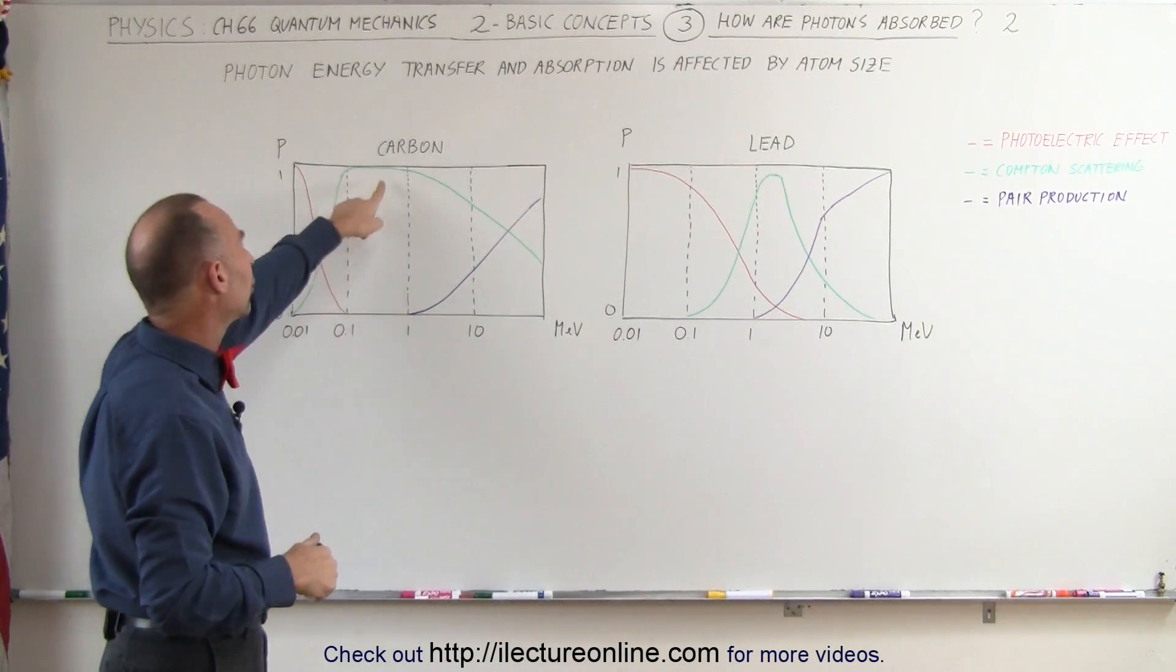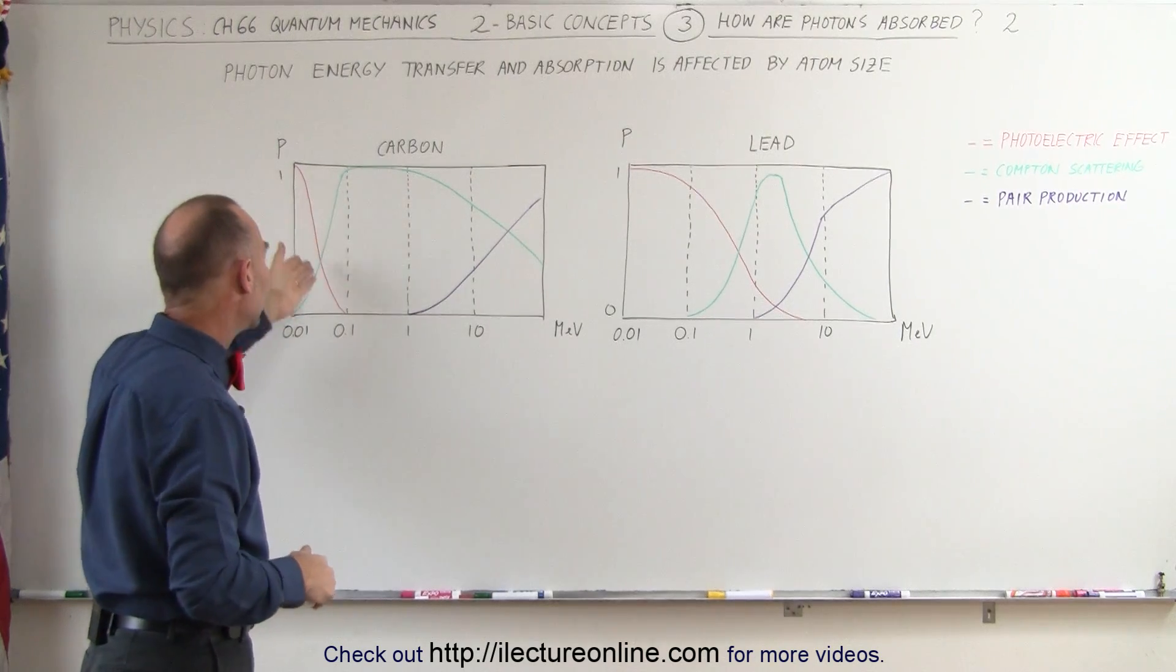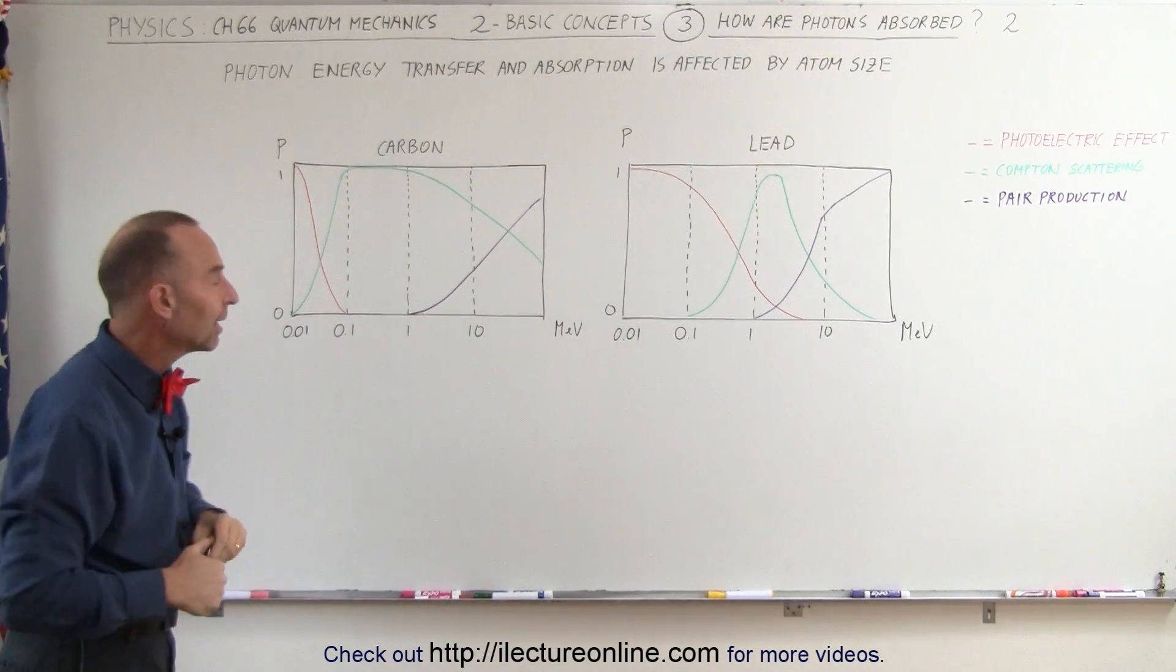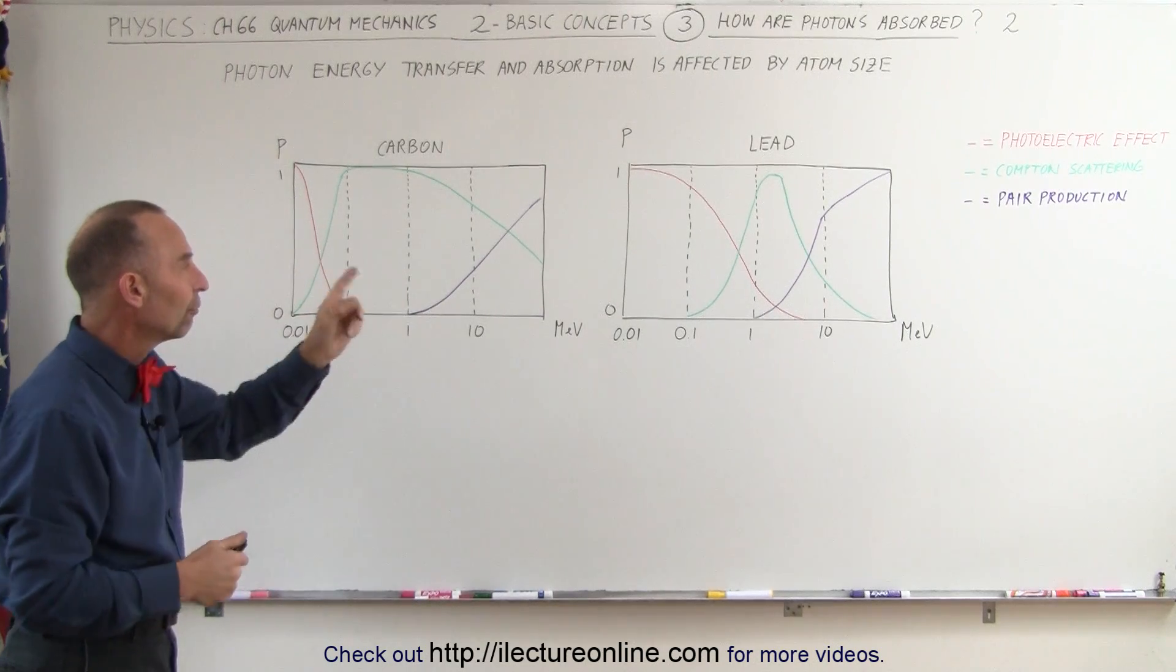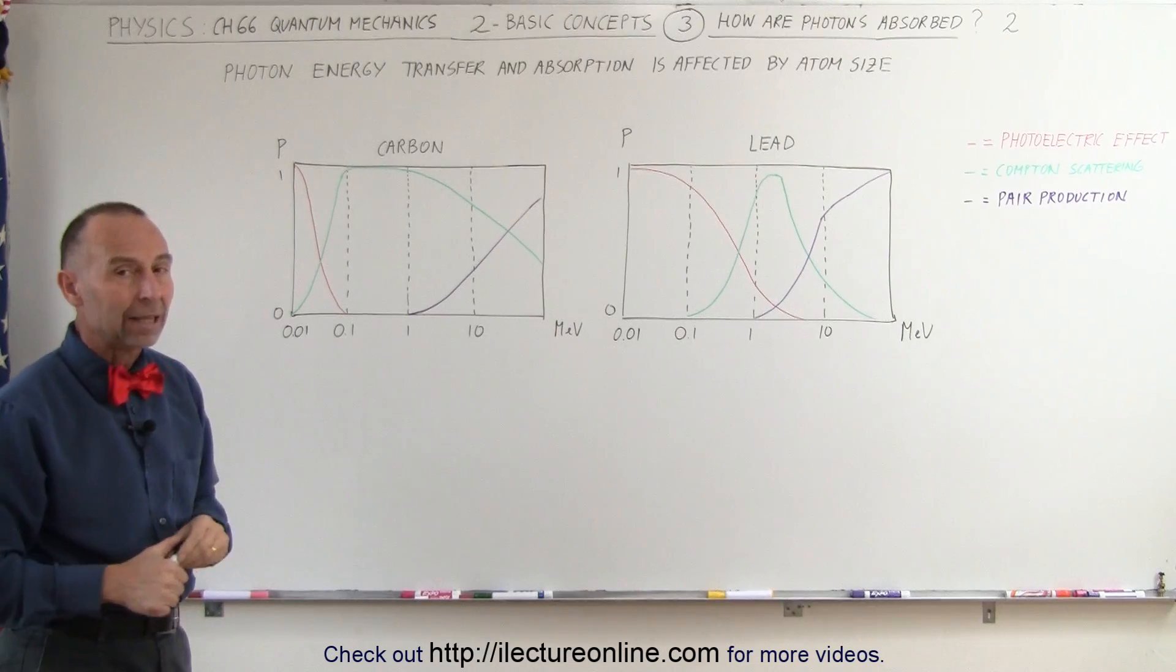With carbon atoms having only six protons at the center, it does not take nearly as much energy to ionize the electrons, so the photoelectric effect tends to stop at much lower energies for carbon relative to lead.